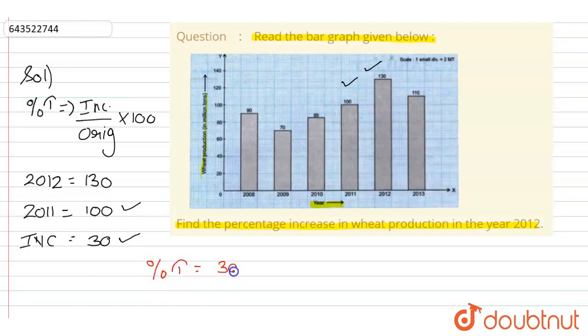Percentage increase is increase, that is 30, divided by original, that is 100, multiply by 100. So 100 and 100 can be cancelled, and hence the percentage increase is equal to 30 percent in the year 2012. This is the answer.